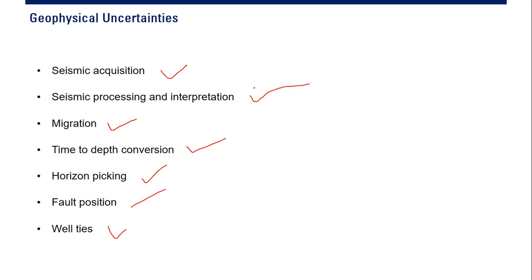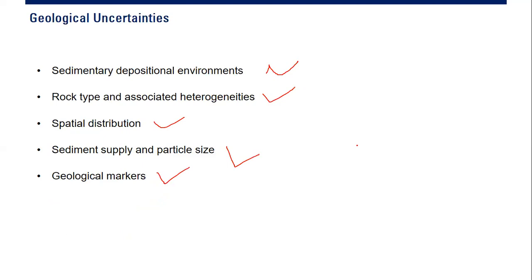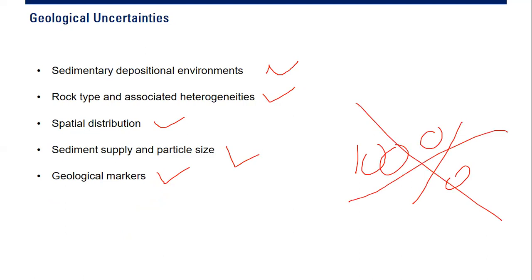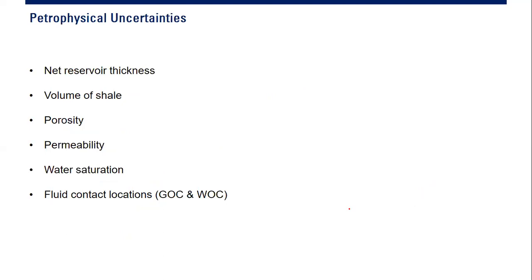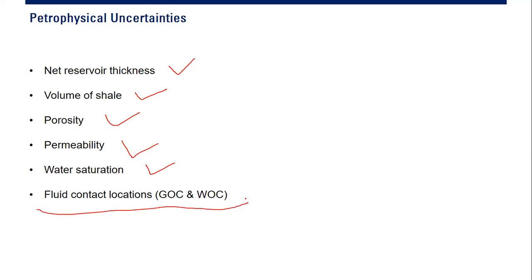What if the seismic has errors? What if the log analysis has errors? We cannot be 100% certain. Petrophysical uncertainty also exists: what is the net reservoir thickness, net pay volume, shell porosity, permeability, water saturation? What is the exact location of the fluid contact? We cannot be 100% sure.